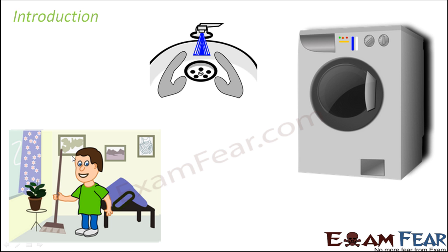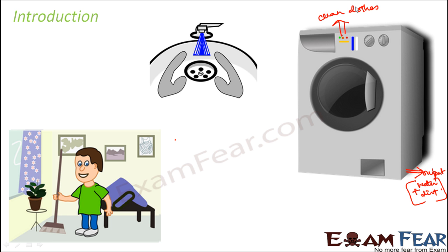We wash clothes in the washing machine. The clothes are dirty — they might have mud, grease, or many different types of dirt. We put them inside the washing machine with detergent and water. At the end of the process, the water flows out carrying all the dirt with it. So the byproduct is water with dirt, and the output is clean clothes. A very similar process takes place inside our body, where all the dirt is washed away along with water.